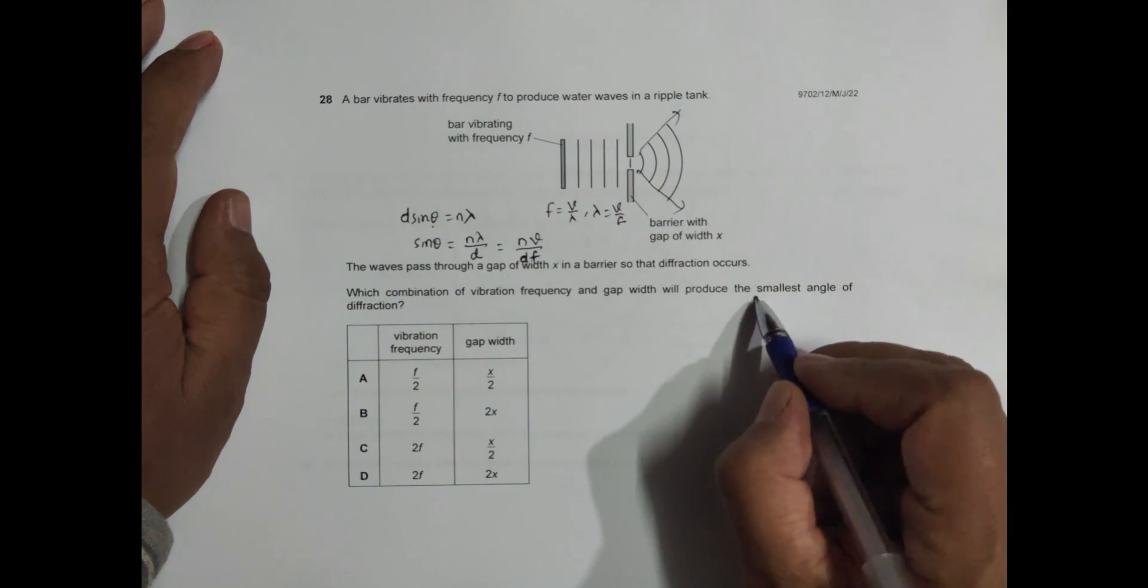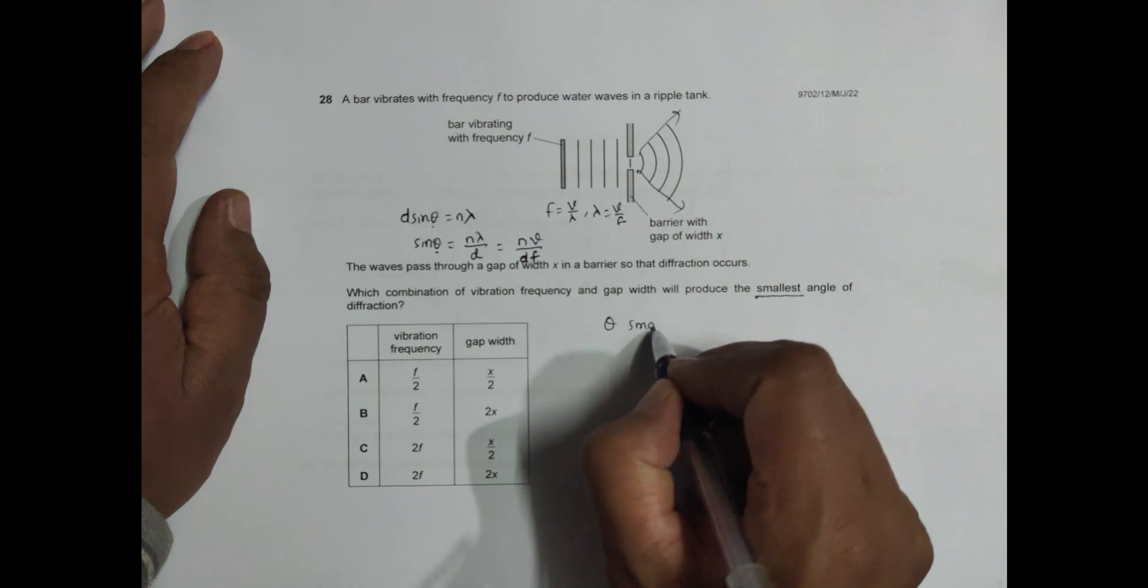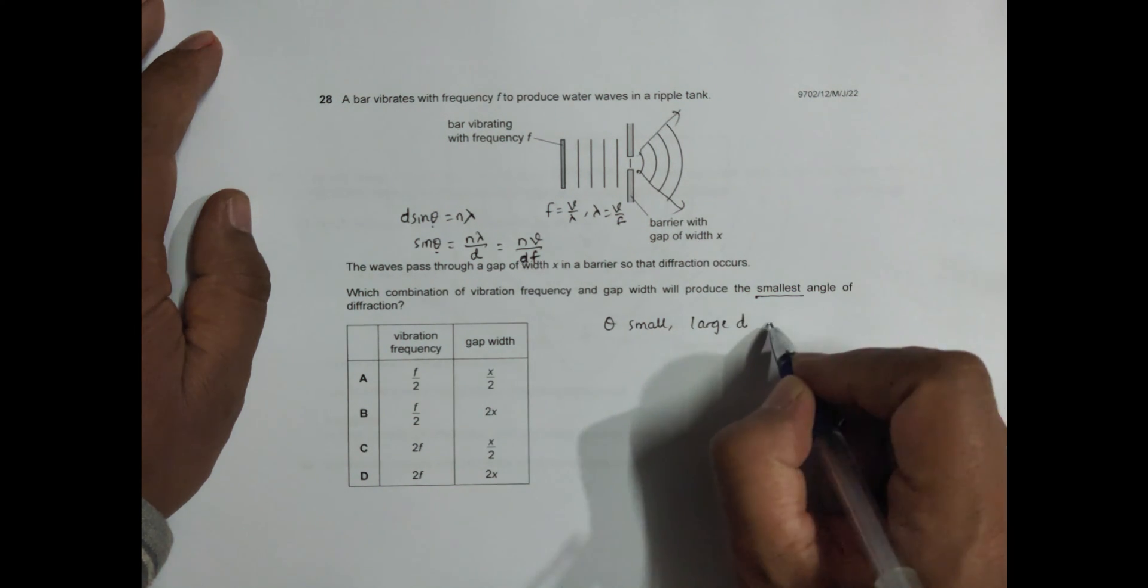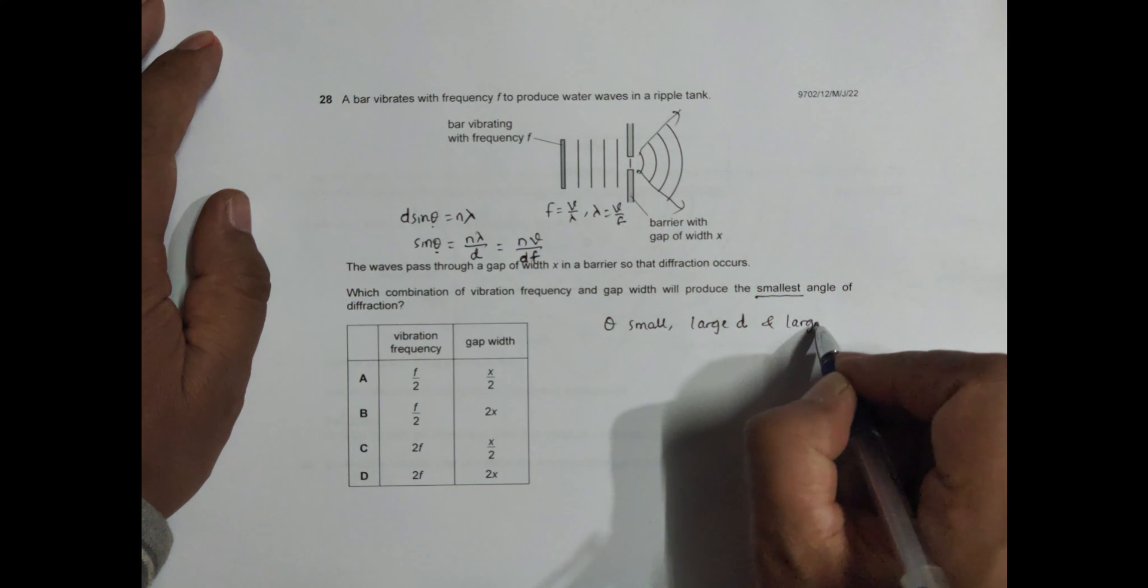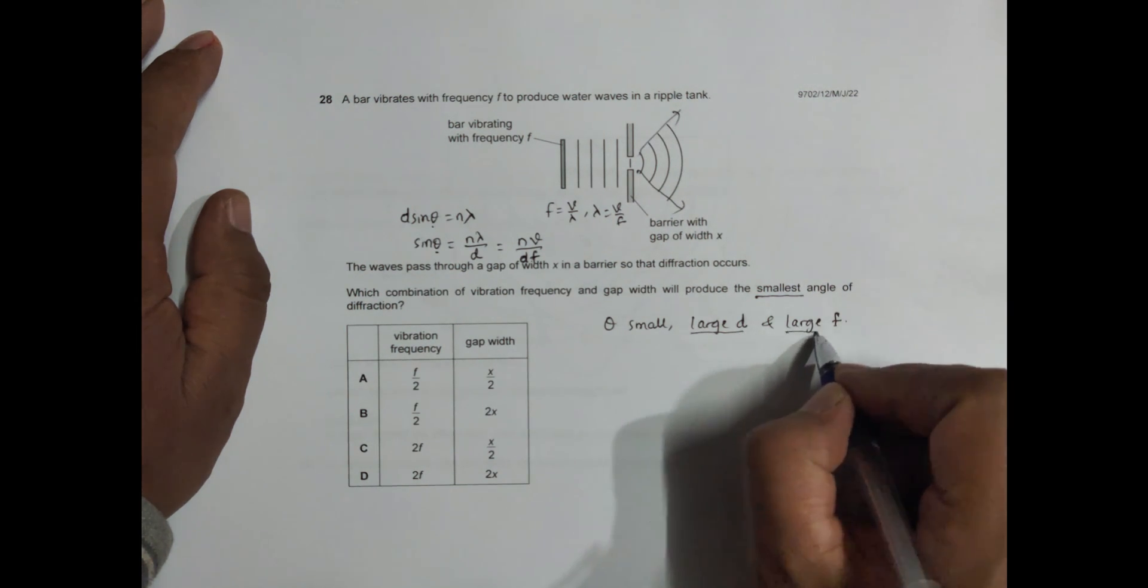So to have the smallest angle of diffraction, to have theta small, we must have large d and large f. To have small theta, we must have large d and large f.